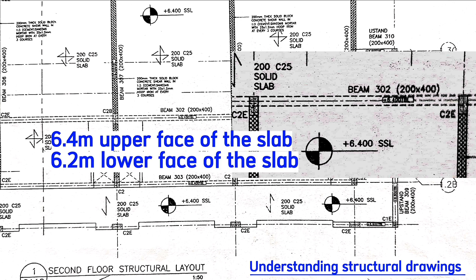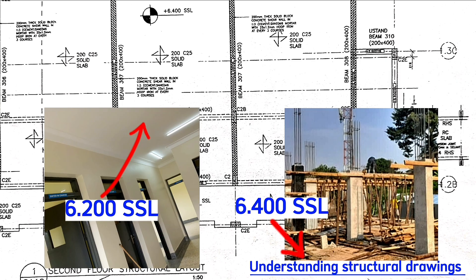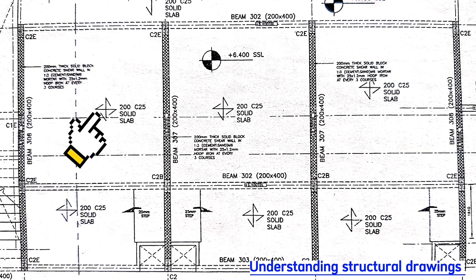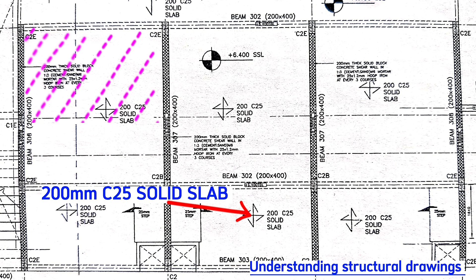When 6.2 meters is written, it means the bottom slab level is at 6.2 meters, or the lower face of the slab. This symbol means that we are casting a 200 millimeters thick Class 25 solid slab around this portion from beam 306 to beam 307.